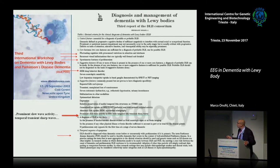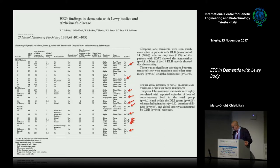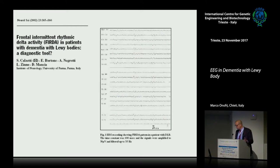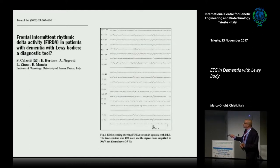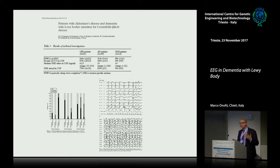This was shown in different papers. The paper by Ian McKeith showed theta and delta activity mostly in Lewy body dementia, with temporal transients. The kind of transient we observed was frontal intermittent rhythmic delta activity - a rhythmic delta which appears periodically on the EEG. Another representation is triphasic waves, which can be mistaken for Creutzfeldt-Jakob disease in dementia with Lewy bodies.